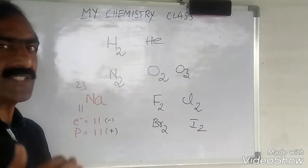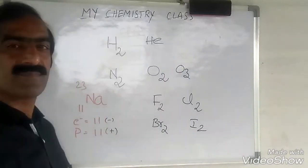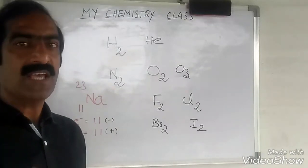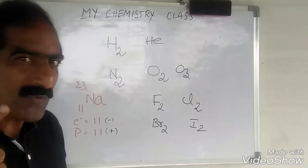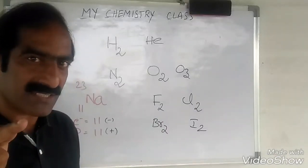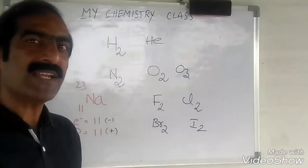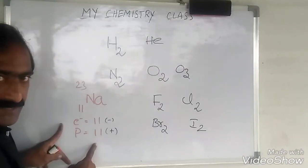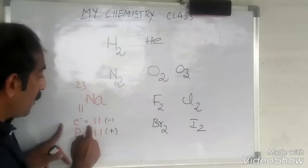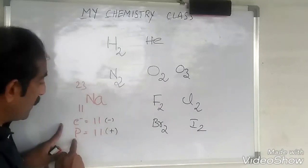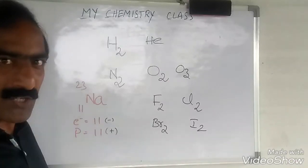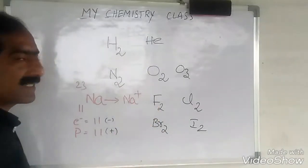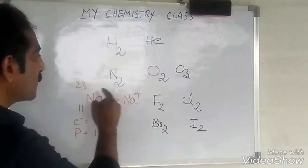How is an ion formed? Ion is formed from atom by losing or by gaining of electrons. If sodium loses one electron, it loses one negative charge — that means its positive charge is increased by one unit. Because there are 11 electrons and 11 protons; whenever it loses one electron, the electron number becomes 10 and the proton number is 11. That means one charge is more — that's why it becomes Na⁺. So by losing one electron, a cation is formed.